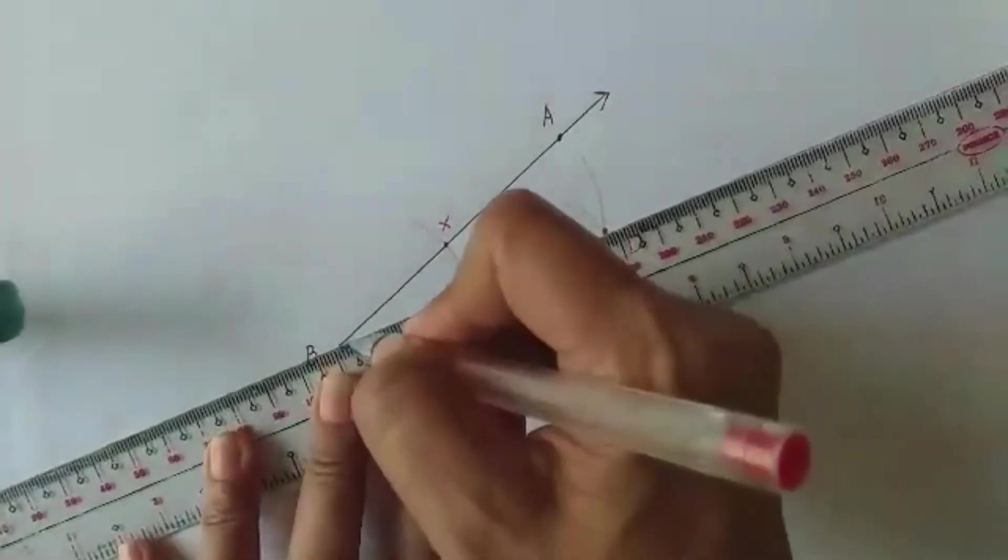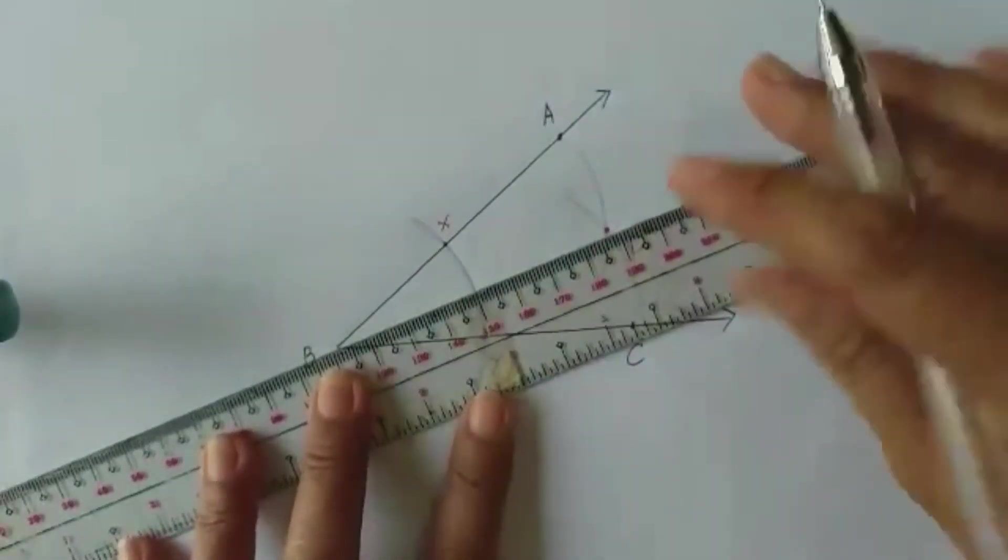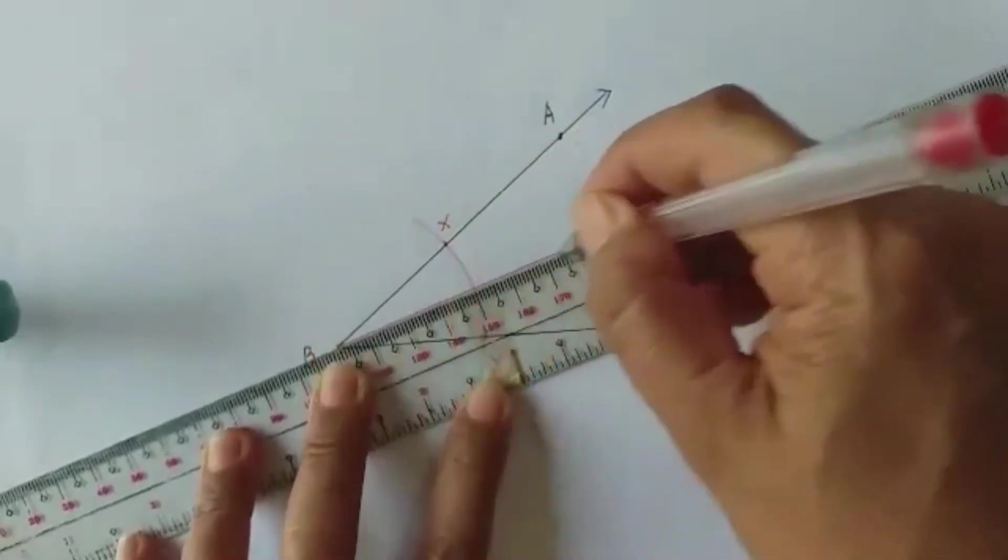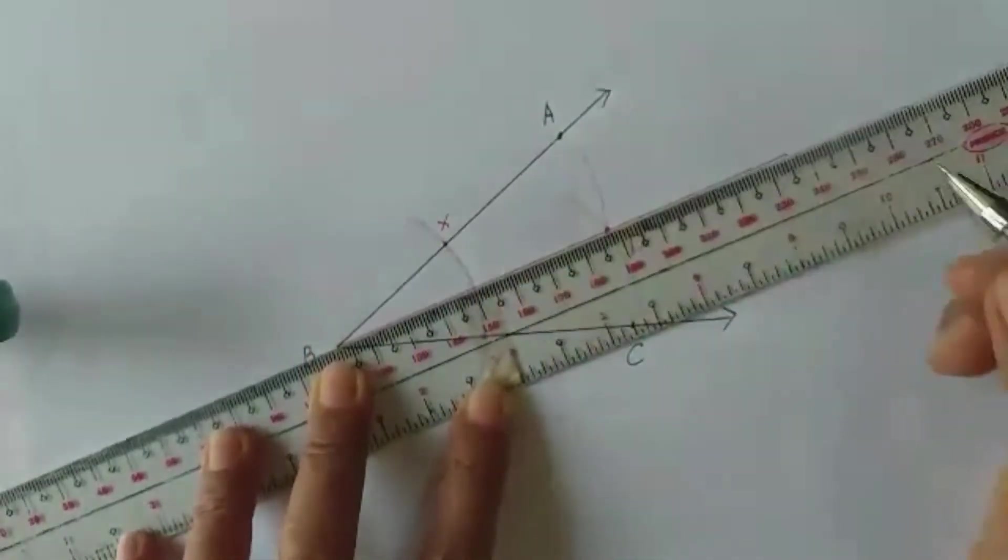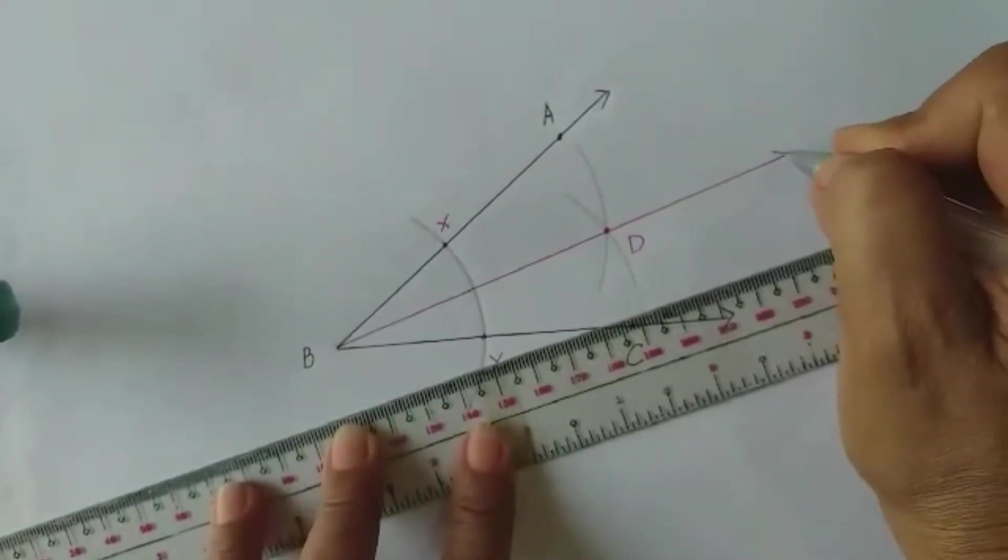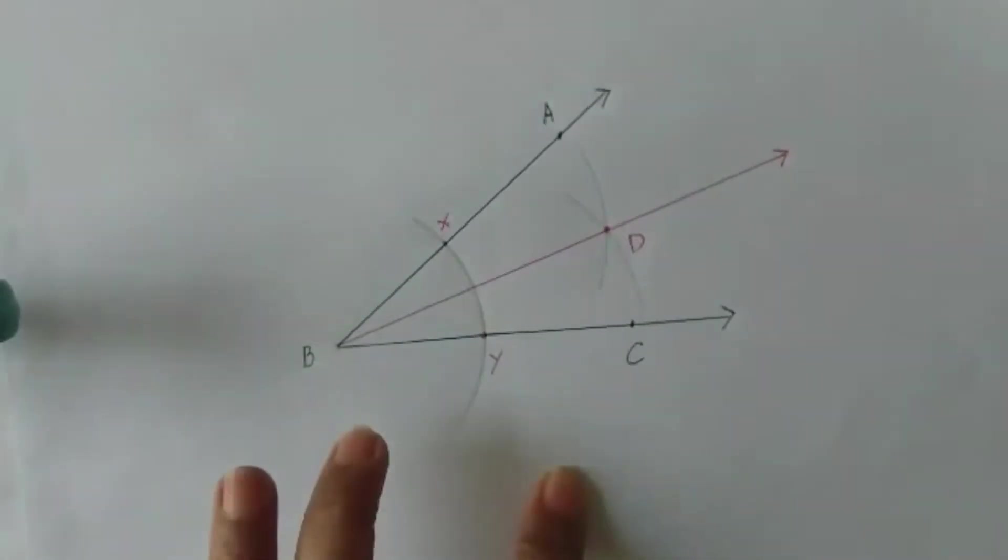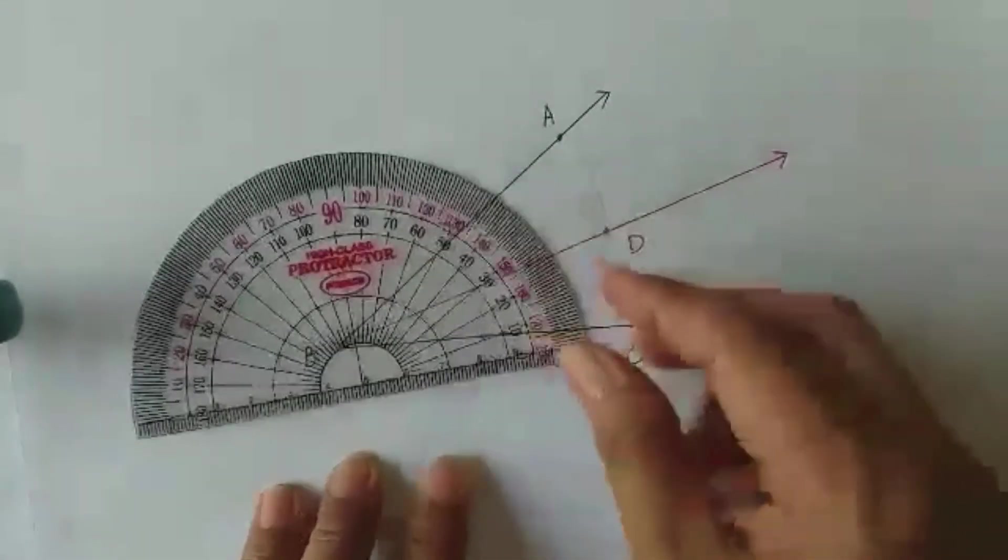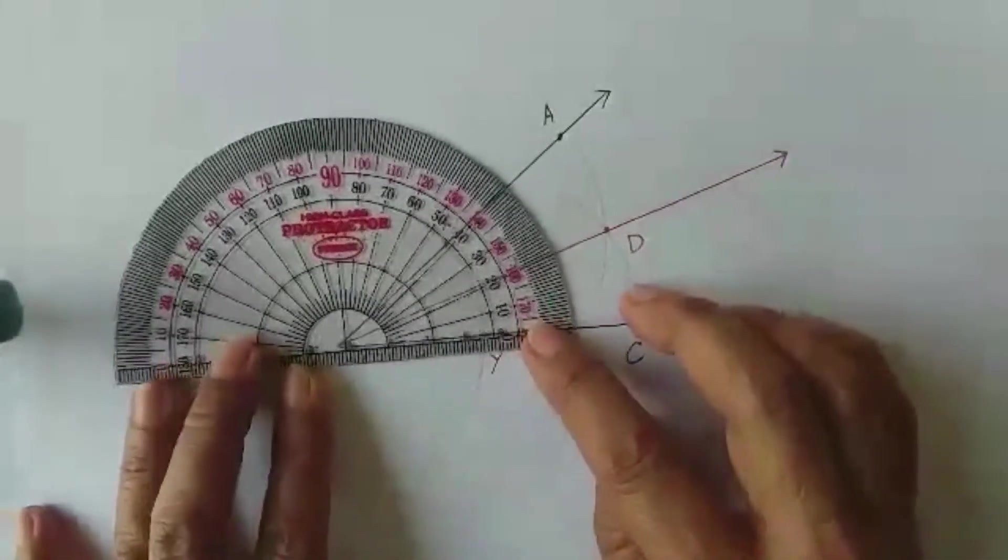Get again your ruler. Connect our points, point B which is at the vertex, and point D, the intersection of the small arcs at the interior of angle ABC.